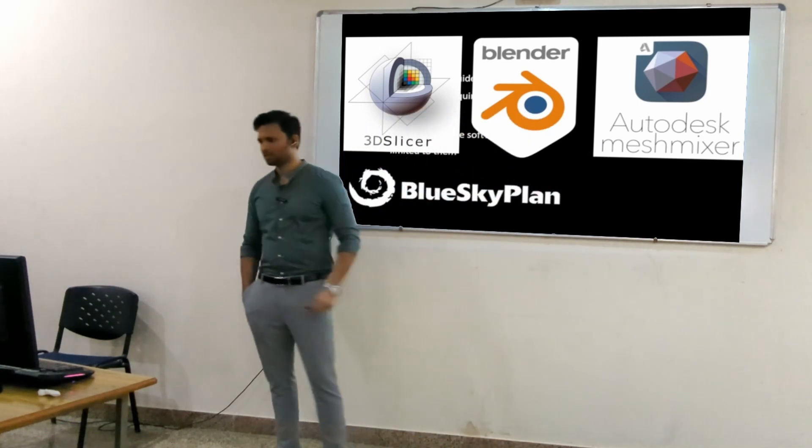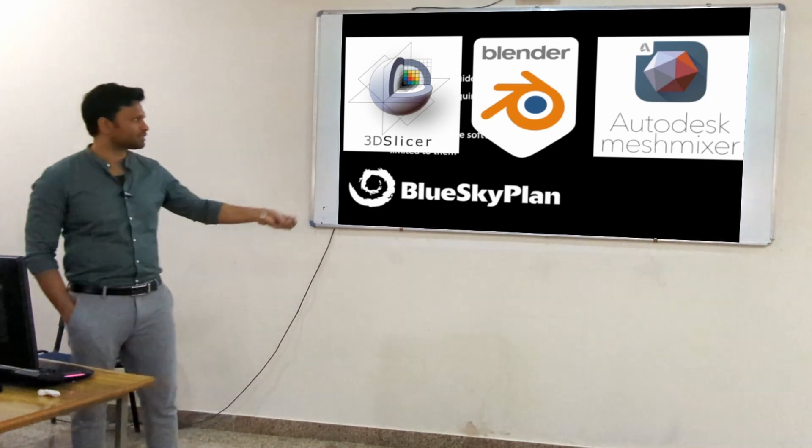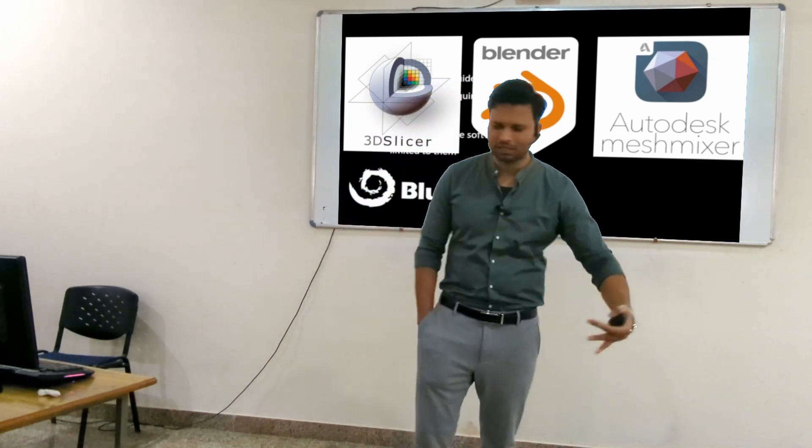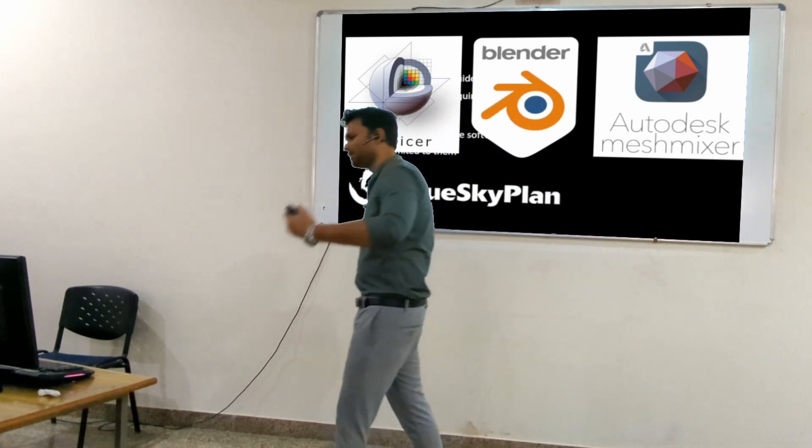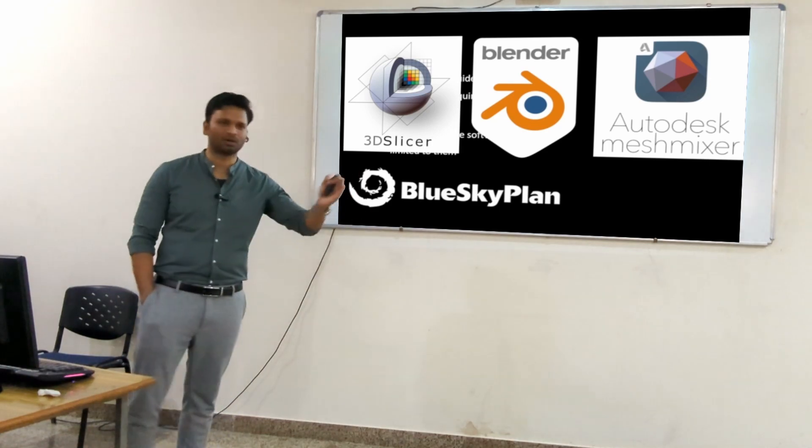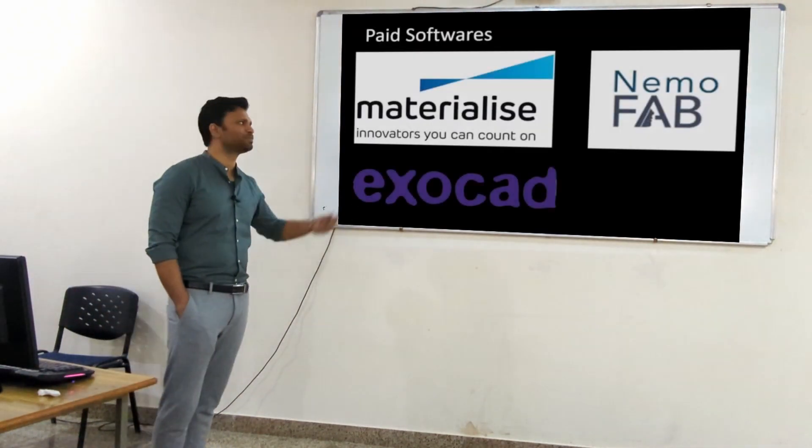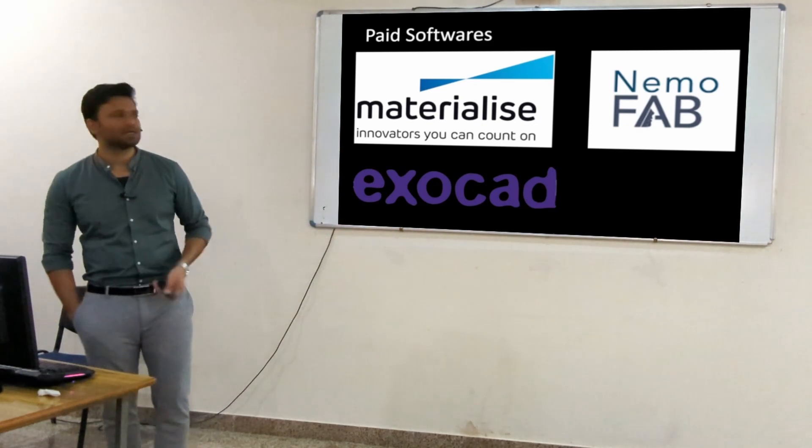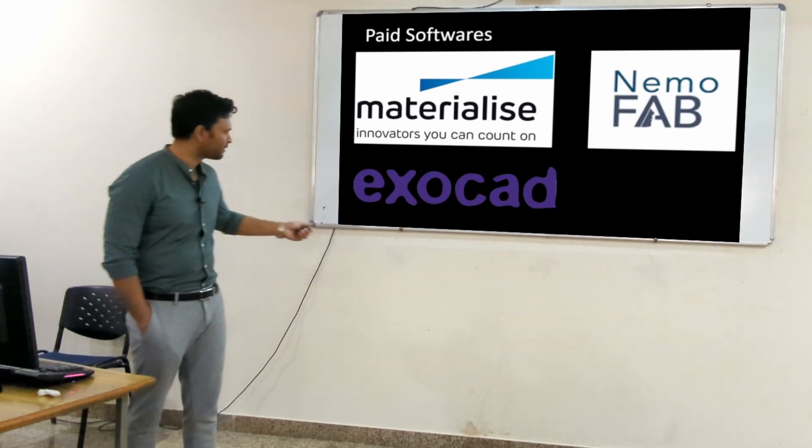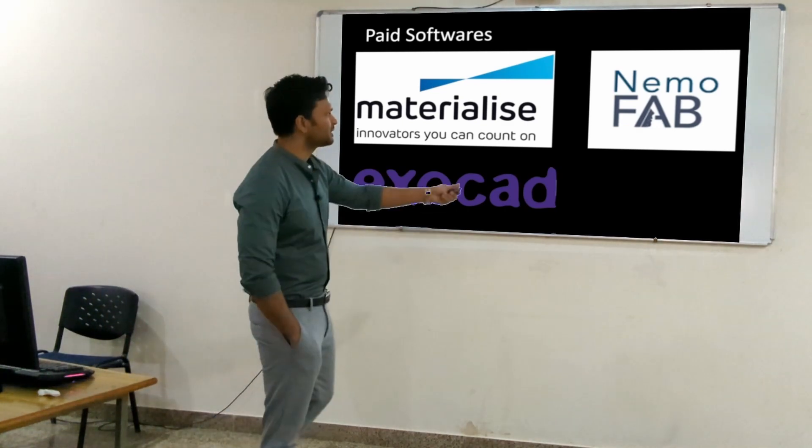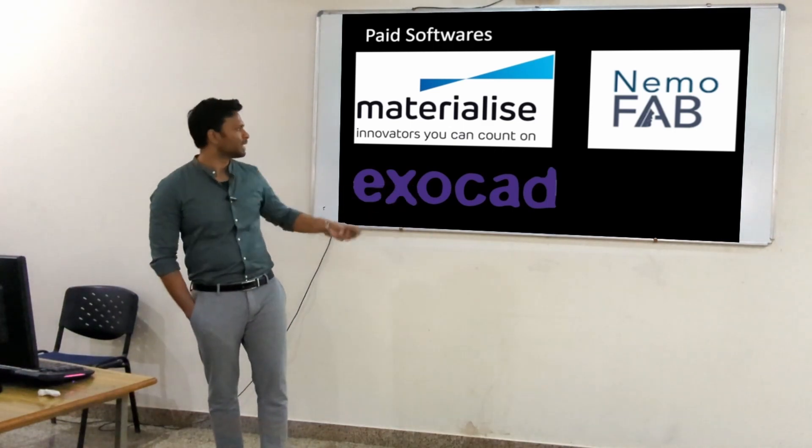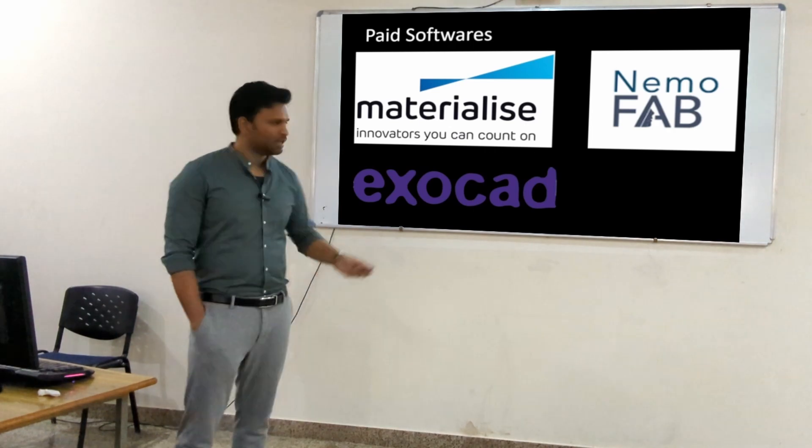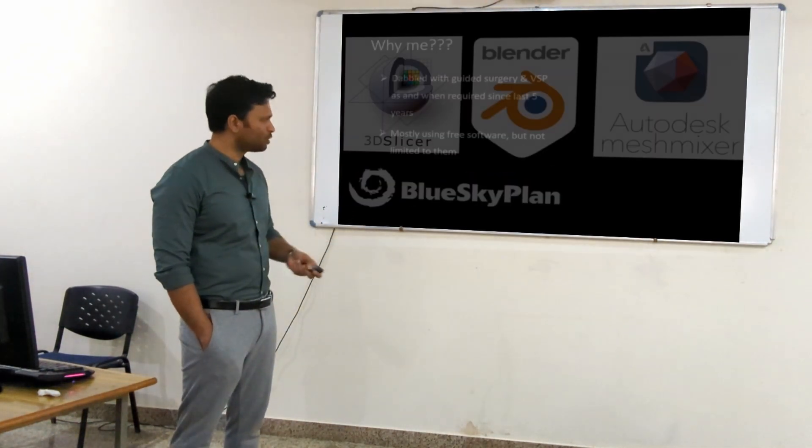These are the free softwares. Then there are some paid softwares of course. These are general purpose software - they will work, but the learning curve is steep and it's going to take slightly longer time as compared to the other specialized paid softwares. These softwares are Materialise, Nemofab, and Exocad. These are very expensive. This one is cheapest. The other two are very expensive. This is especially used for orthognathic surgery planning. This is more of a general surgery planning software.